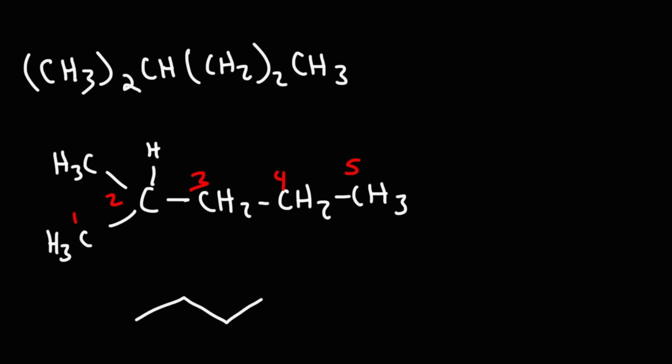So this is two, three, four, five. On carbon two, we have a methyl group, and so we'll put that there. And this is our answer, two-methyl pentane. So that's how we can convert this condensed structure into a skeletal structure.